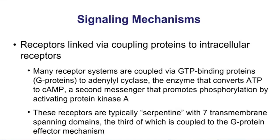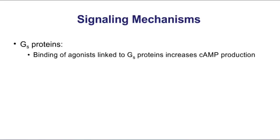We have receptors that are linked via coupling proteins to intracellular receptors — what we're basically talking about here are G-proteins. The challenge for us is to make sure you can take what you know about G-proteins, couple those directly to certain receptors, and then couple that with the drugs that either stimulate or block those receptors. There are three main types of G-proteins. GS and GI are opposite of each other; they both work through adenylyl cyclase. GS are stimulatory G-proteins — they're going to activate adenylyl cyclase to increase cyclic AMP production.